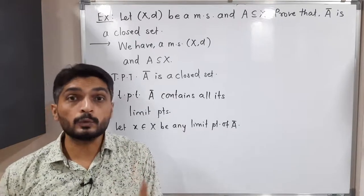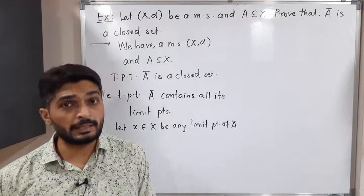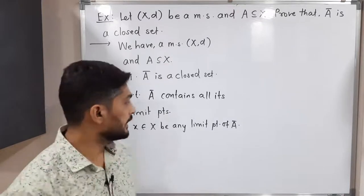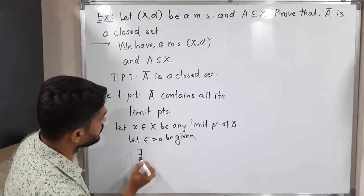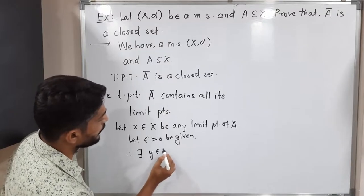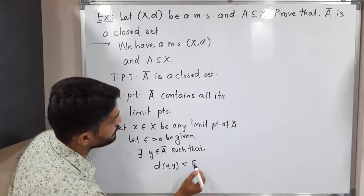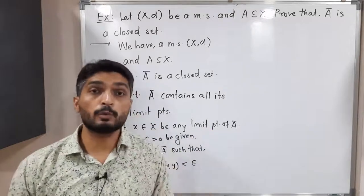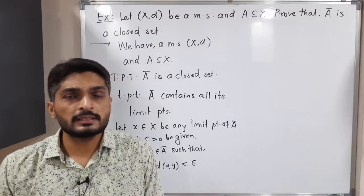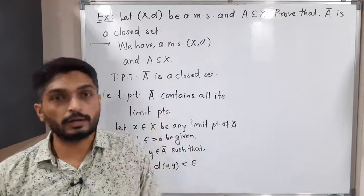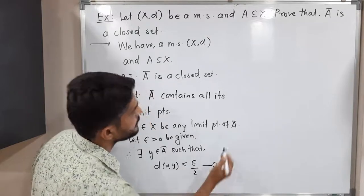There is one more way to define a limit point. If a point is very close to a set, then we say it is a limit point. Using epsilon, we can define the same: let epsilon greater than zero be given. Since x is a limit point of Ā, it is very close to Ā, so there exists some point y belonging to Ā such that d(x, y) is less than epsilon. I will use epsilon/2 here — we will call this statement (1).